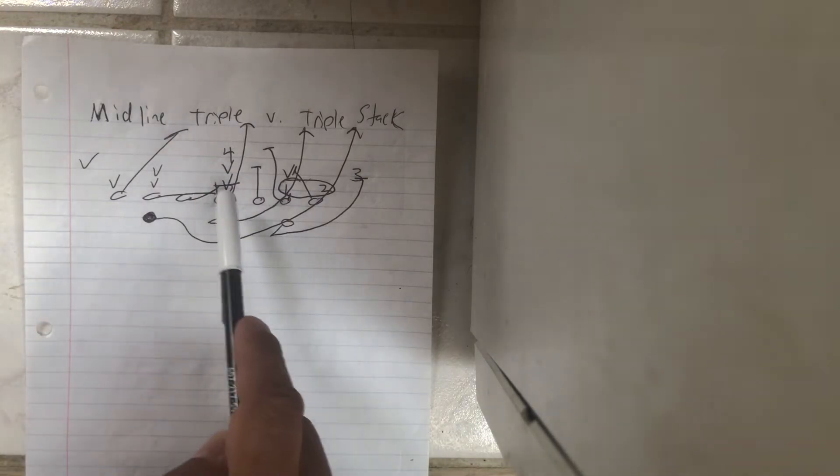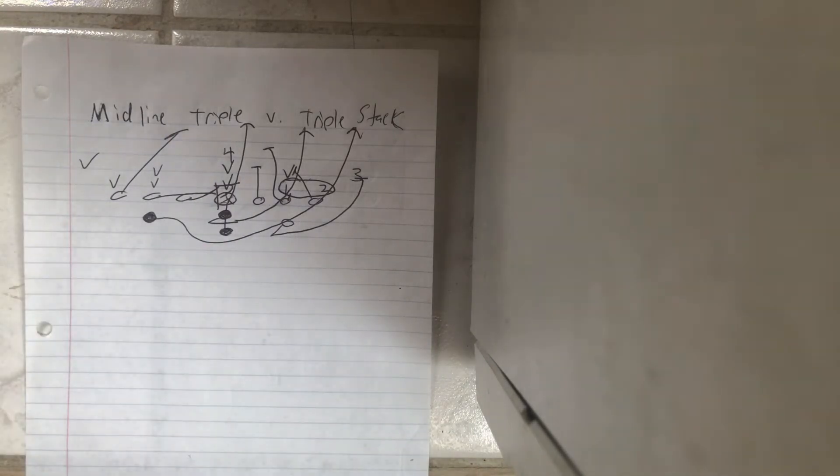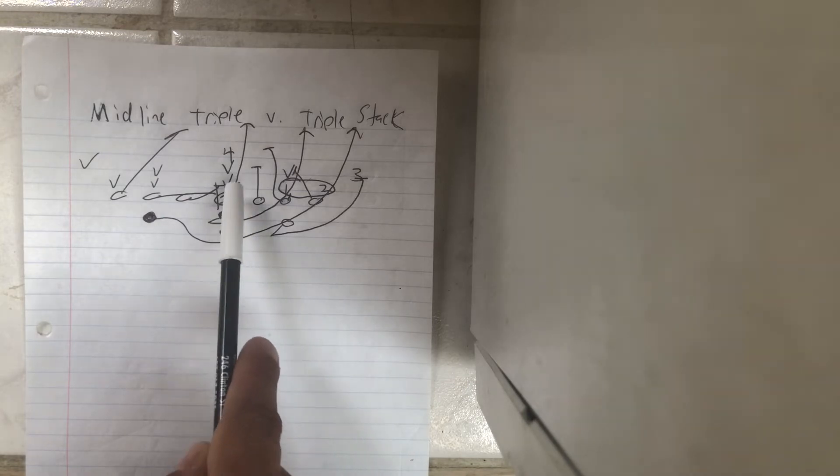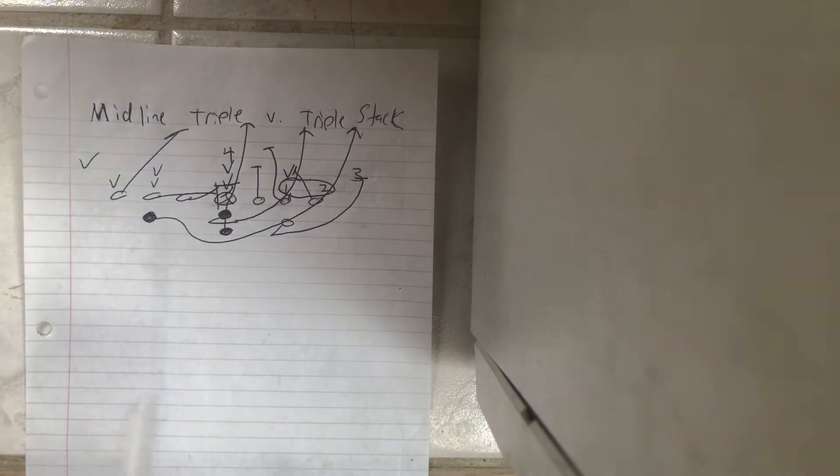It's going to be a back call. The backside guard and center are going to double the zero technique, get their near knee through the crotch, near hand to the stomach, toes north. Guard is going to get his left knee through the crotch of the mic.